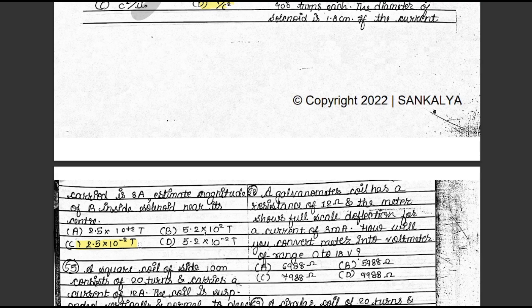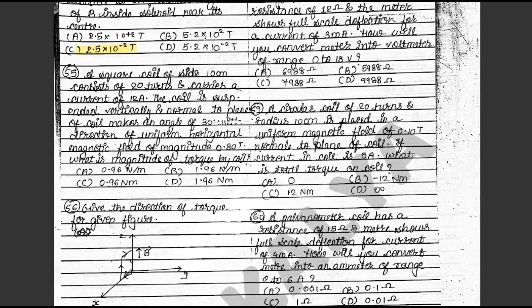Question 55: A square coil of side 10 cm consists of 20 turns and carries a current of 12 ampere. The coil is suspended vertically and the normal to the plane of the coil makes an angle of 30 degrees with a uniform horizontal magnetic field of magnitude 0.8 Tesla. What is the magnitude of torque on the coil? The answer is C: 0.96 Nm. This is in textbook exercise 9.